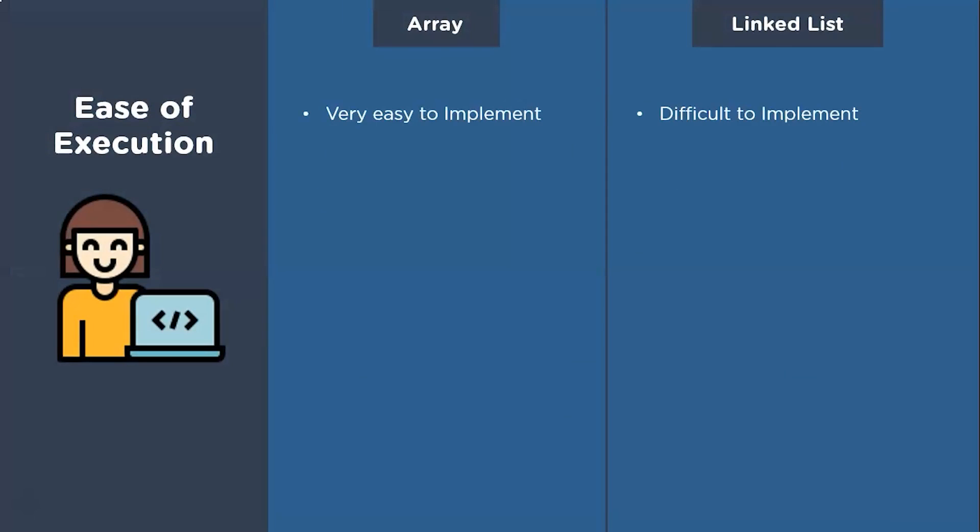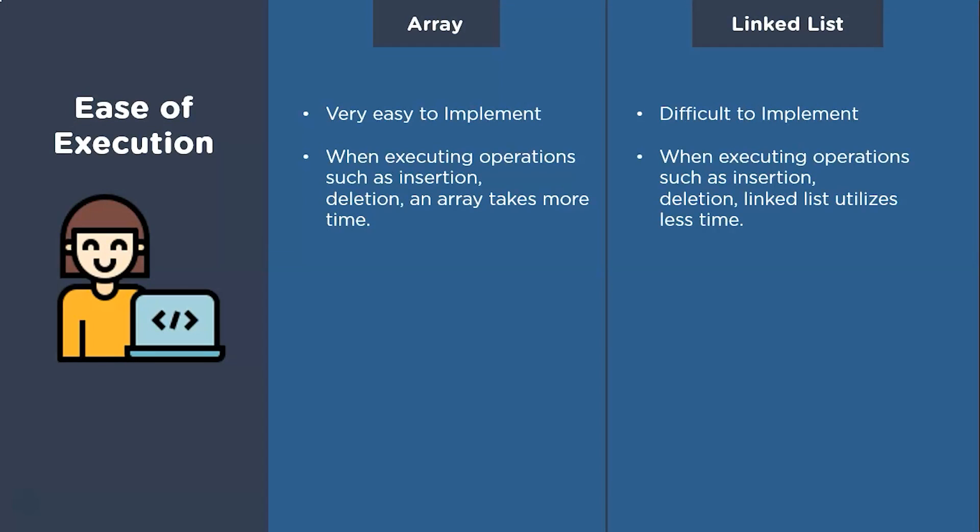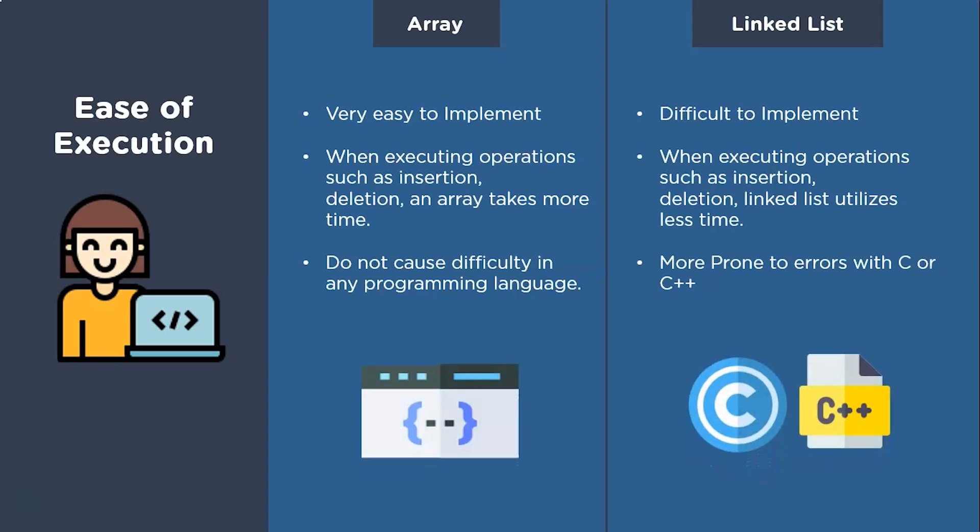The last parameter that we are going to talk about is the ease of implementation. An array is comparatively easier to implement than the linked list as it only requires a few lines of code. But arrays take more time to execute operations such as insertion and deletion, whereas linked lists are quicker to perform these operations like insertion and deletion. The only difficulty we have in the case of linked list is that its execution is dependent on the programming environment. In the case of C and C++, linked lists are more prone to errors like segmentation fault and memory leaks. That is why working with linked lists necessitates caution, whereas arrays are more user-friendly and errorless for their coding implementations.